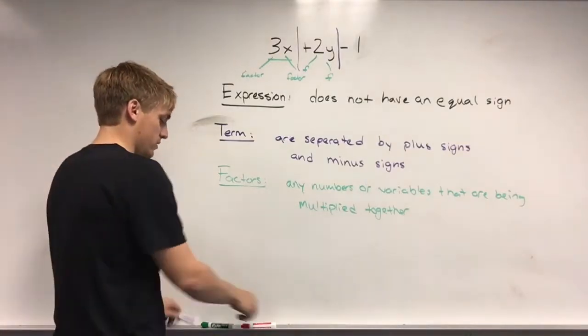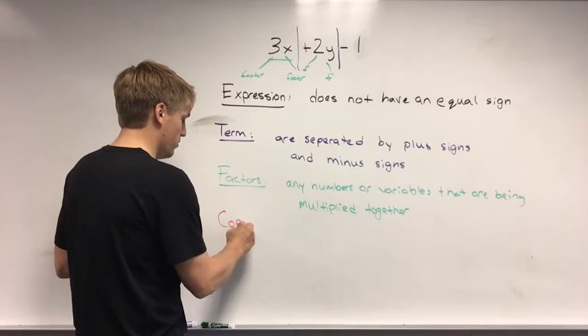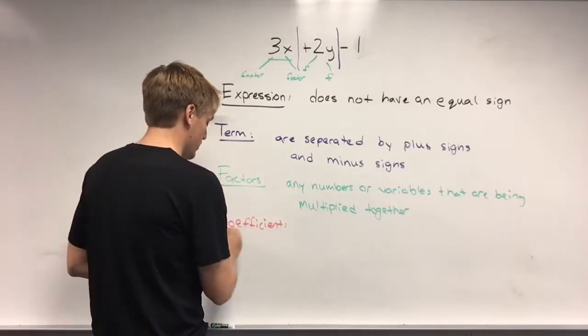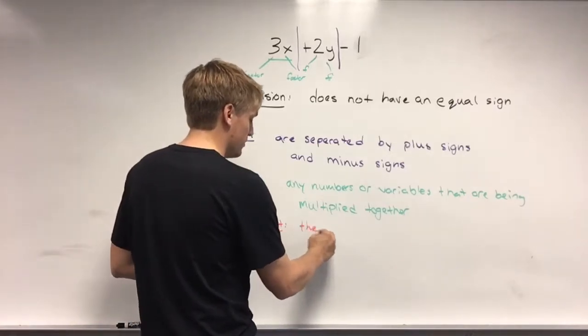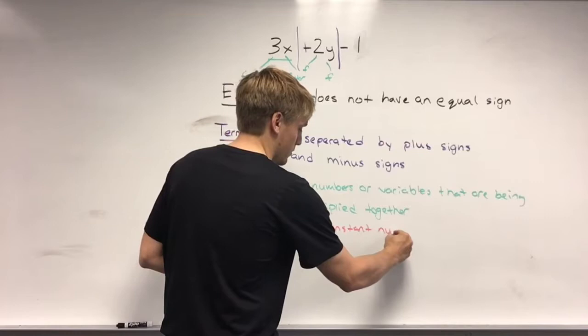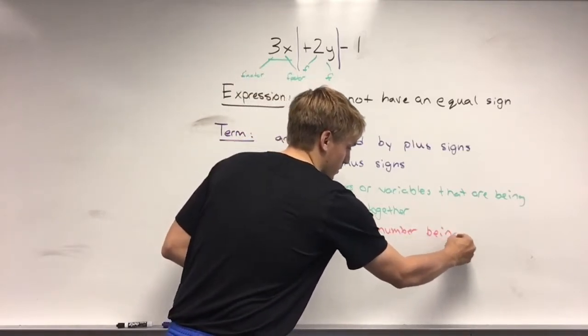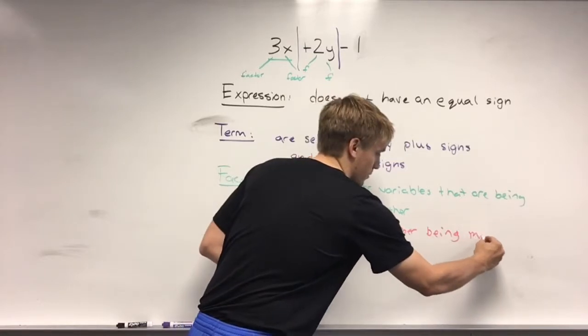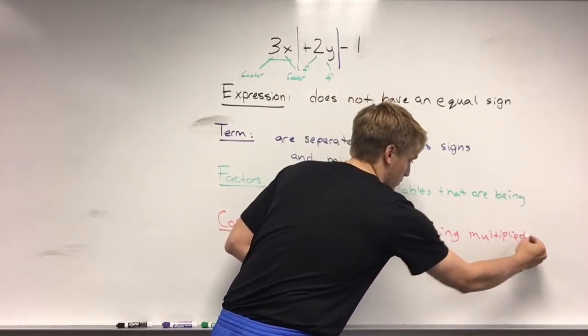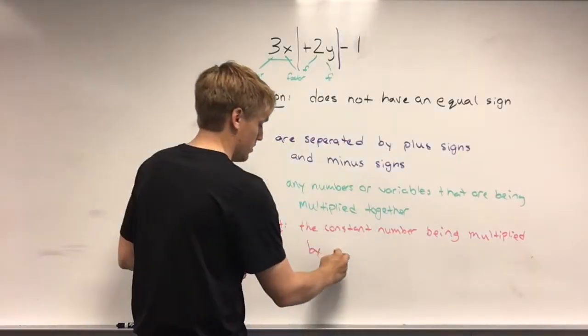The next vocab word we need to know is what a coefficient is. And a coefficient is the constant number being multiplied by a variable.